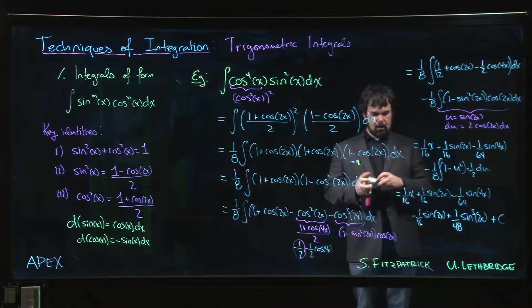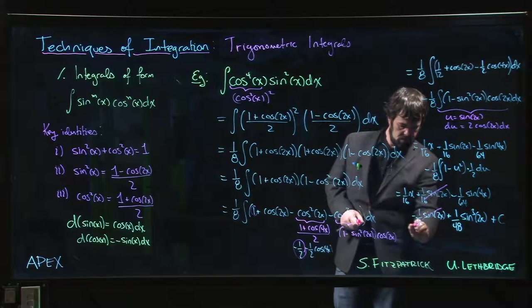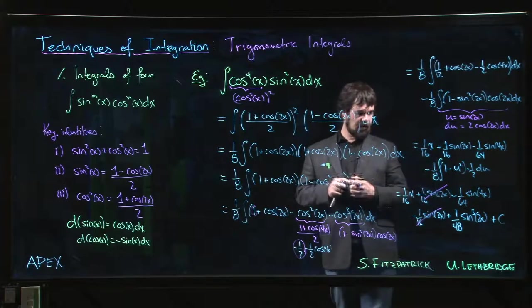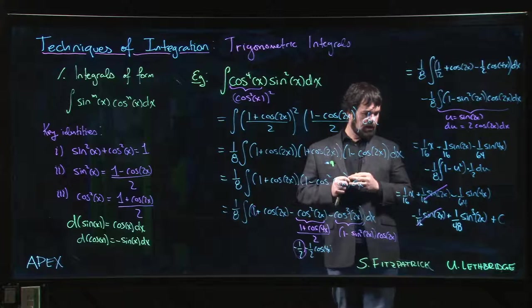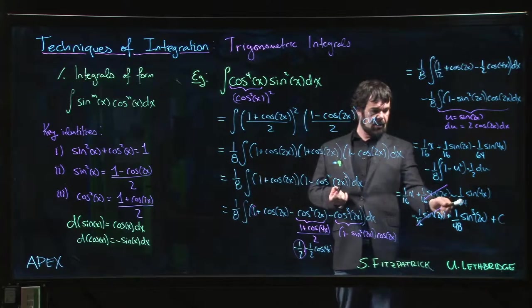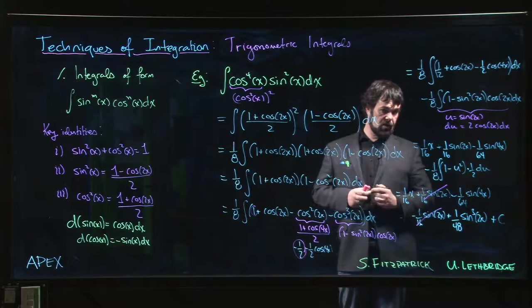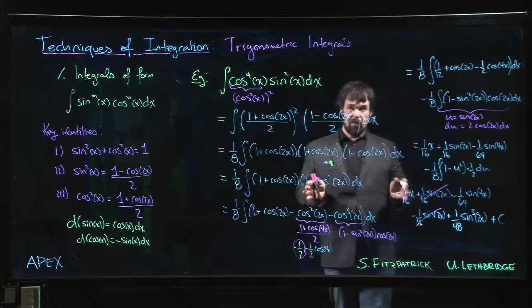You got it all the way done. I guess we do have one simplification. Those two terms seem to cancel. So maybe it's not so bad after all. 1 over 16x minus 1 over 64 sine 4x, 1 over 48 sine cubed 2x. It's a bit of a mouthful, it's a fair amount of work. It's tedious, but we can get there.